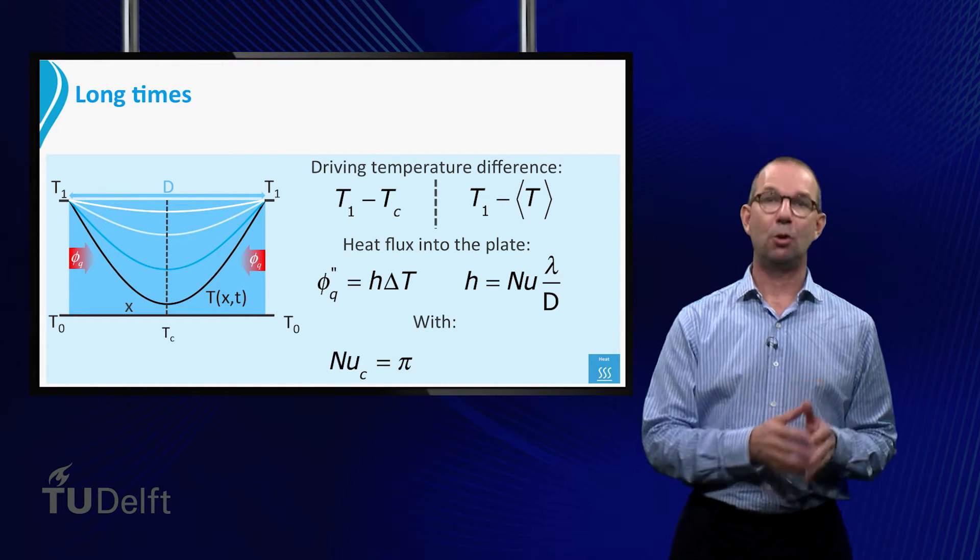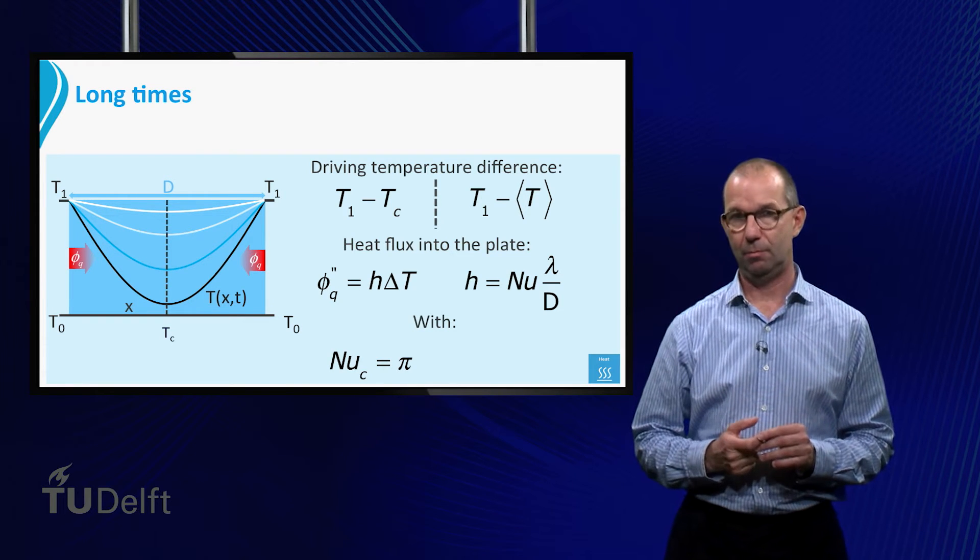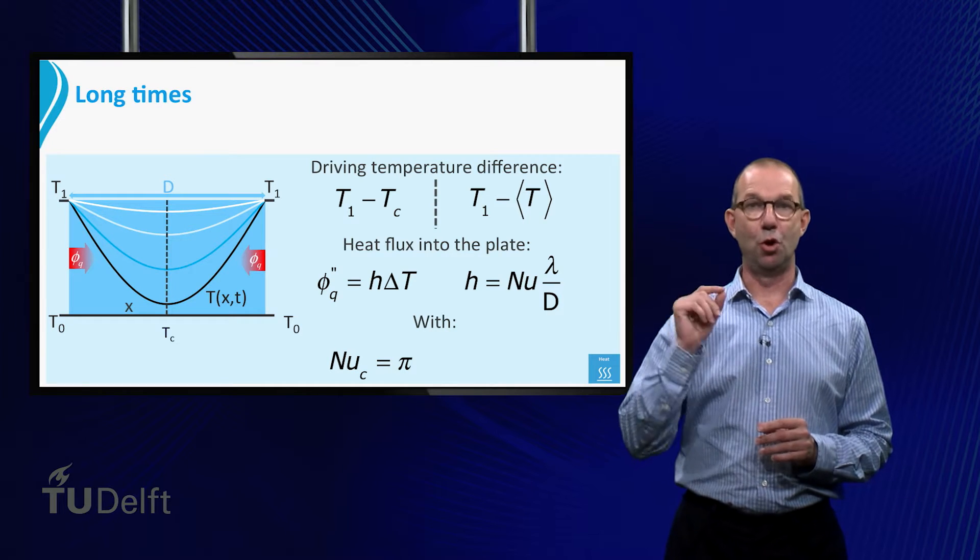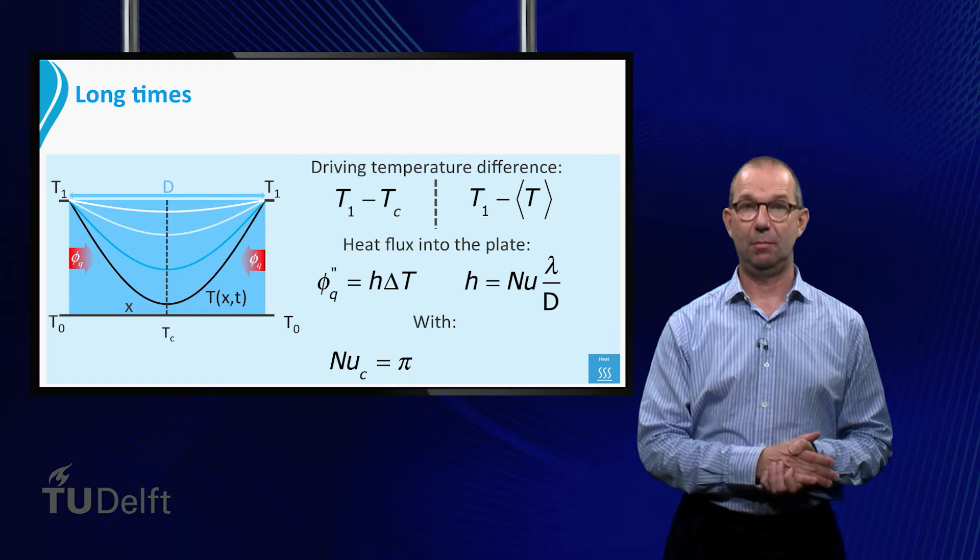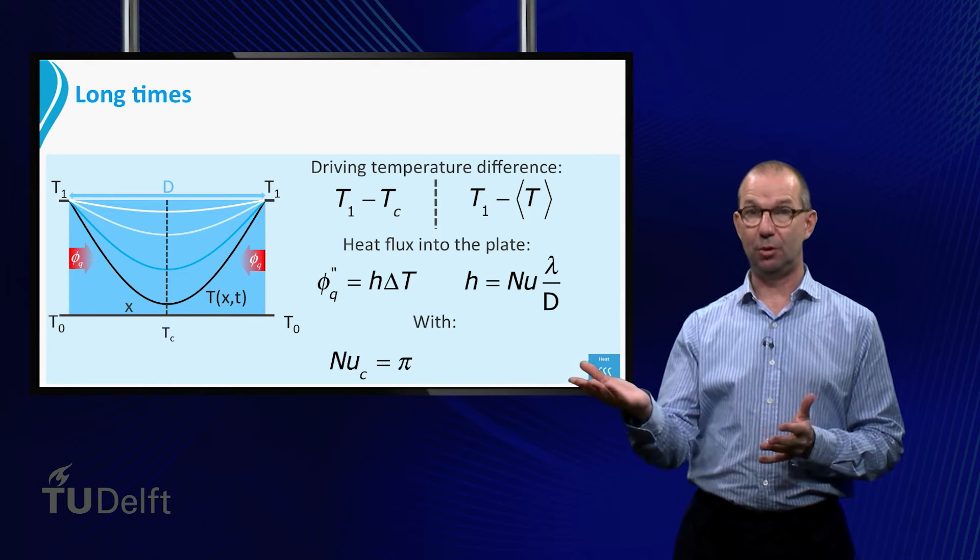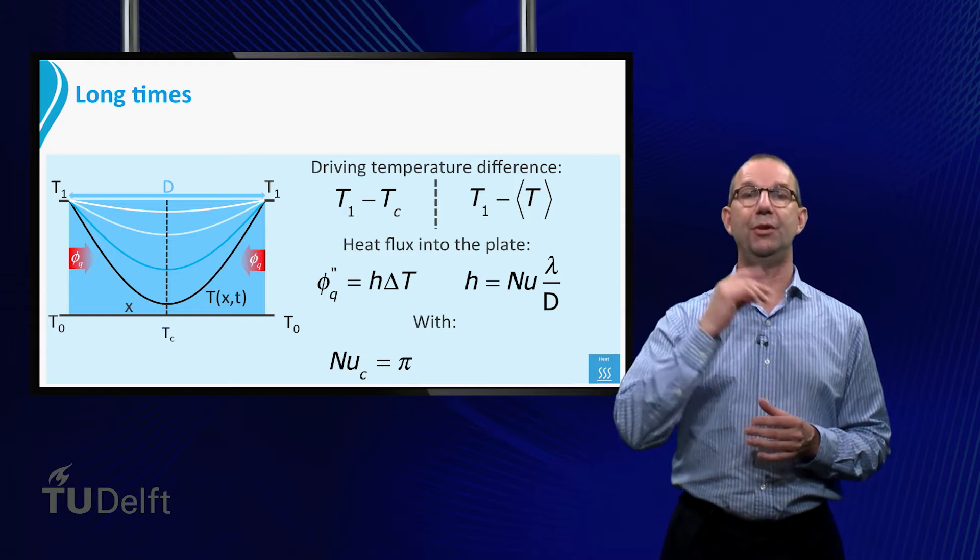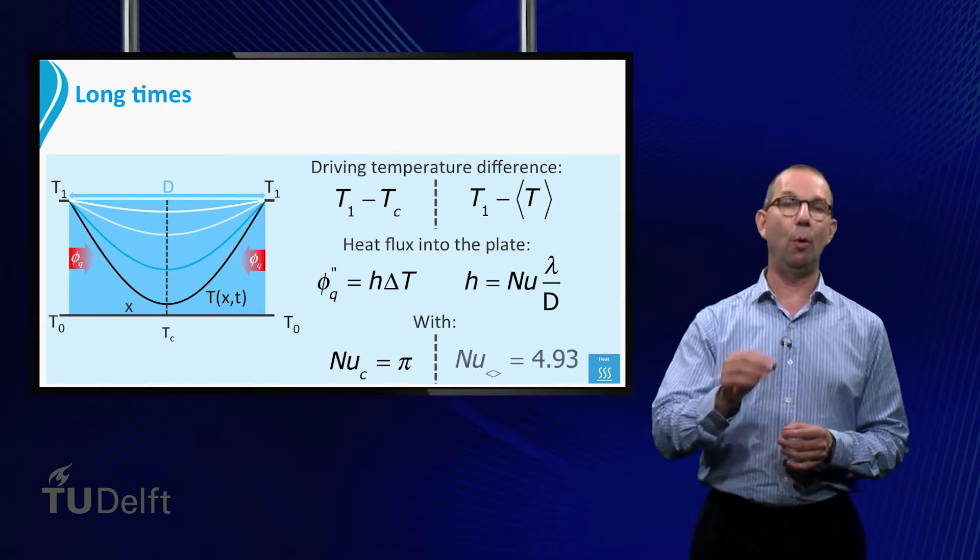We obviously have two different values for Nusselt depending on which of the two driving forces we have chosen. Nusselt sub C corresponds to choosing T center in the driving force. It is a constant and does not depend on time, as was the case in penetration theory. When we base the driving force on the average plate temperature, we also have a constant Nusselt number. In this case it has a value of 4.93.